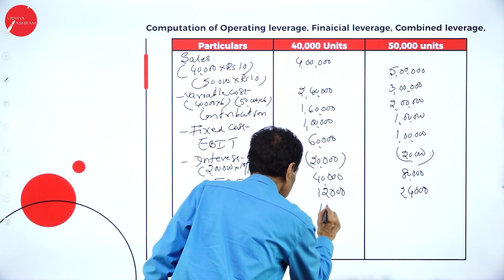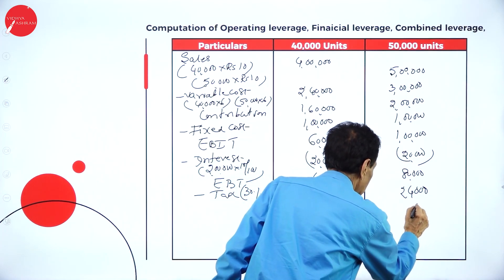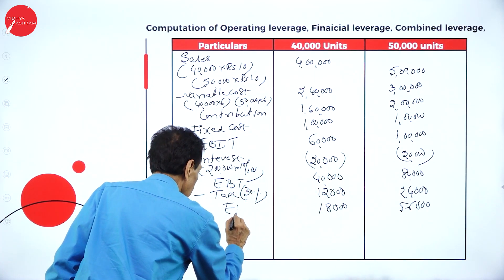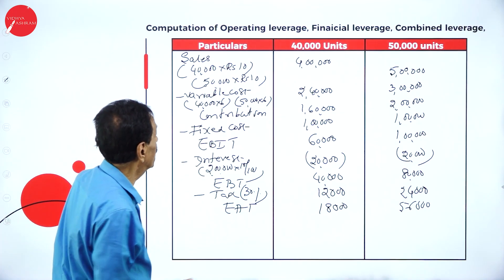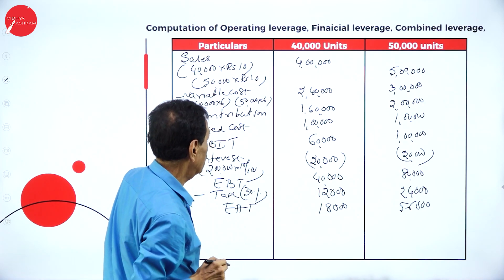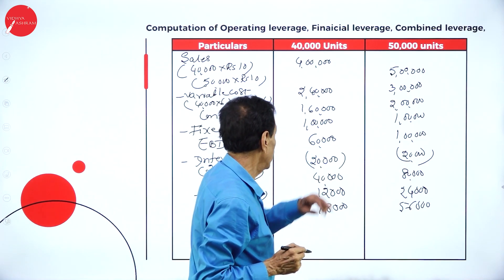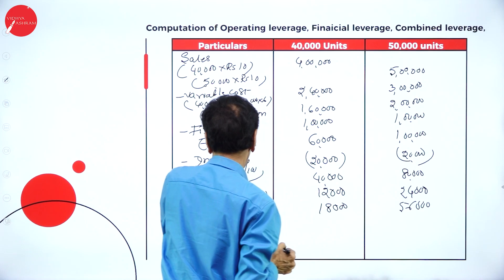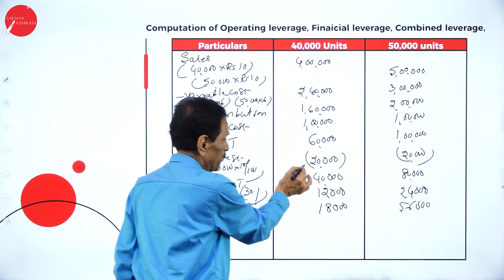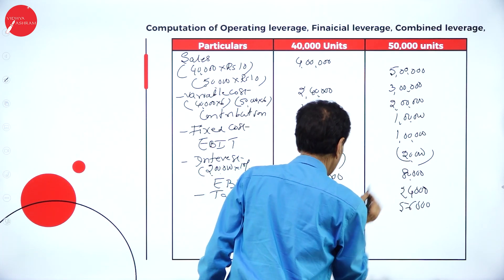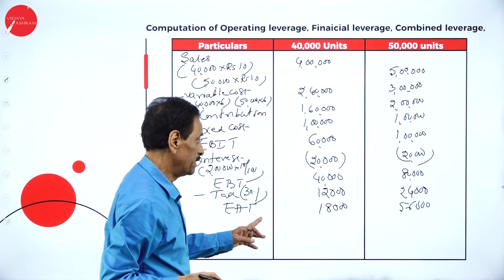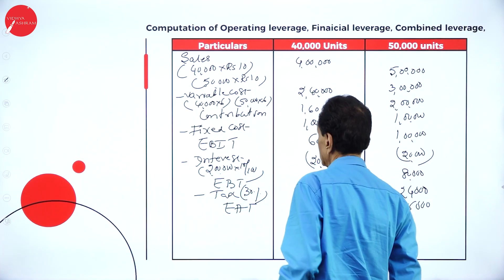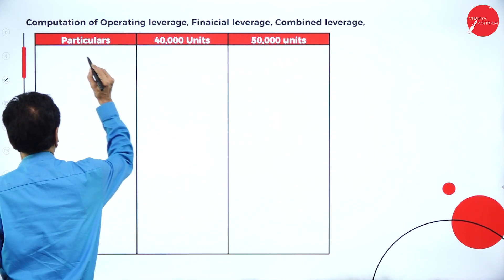Earning after taxation: 18,000 and 56,000. Recap: Sales 4 lakh / 5 lakh; variable cost 2 lakh 40,000 / 3 lakh; contribution 1 lakh 60,000 / 2 lakh; fixed cost 1 lakh; EBIT 60,000 / 1 lakh; interest on debt 20,000 / 20,000; EBT 40,000 / 80,000; tax at 30%: 12,000 / 24,000; earning after taxation: 18,000 / 56,000.